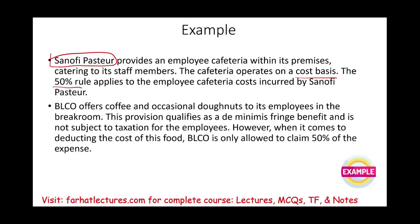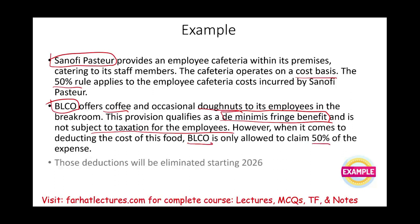Another example: BLCO, Bucknell-Lisicki & Company, the CPA firm where I used to work, offers coffee and occasional donuts and bagels to its employees in the break room. This provision qualifies as a de minimis fringe benefit and is not subject to taxation for the employees — if you ate a bagel or donut, it's not included in your income. However, when it comes to deducting the cost of this food, Bucknell is only allowed to deduct 50% of the expense. And starting in 2026, those deductions are eliminated.